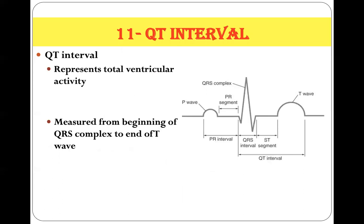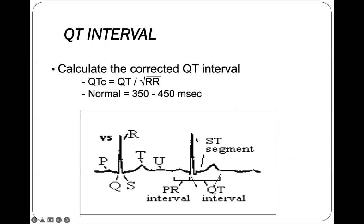There are many applications and ECG machines that can calculate the QTc interval automatically. To calculate it manually, you measure the whole QT interval, keeping in mind that each large square represents 0.2 seconds or 200 milliseconds, then divide it by the square root of the RR interval to obtain the corrected QTc. Normally, the QTc is 350 to 450 milliseconds.